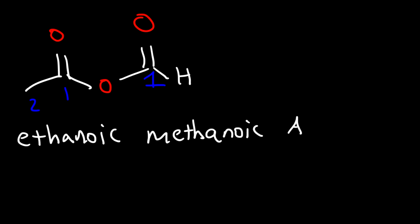And then anhydride. And it's already in alphabetical order. So that's how you can name unsymmetrical anhydrides. Now let's talk about how we can name nitriles.